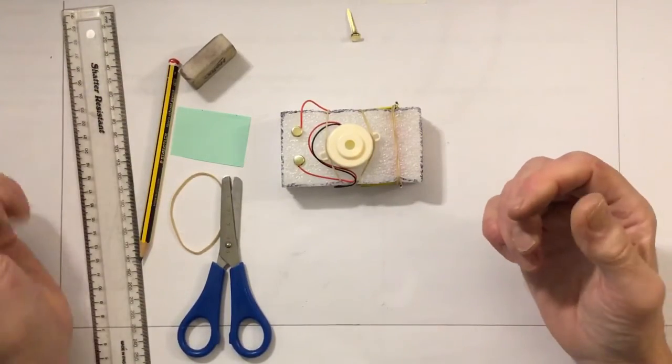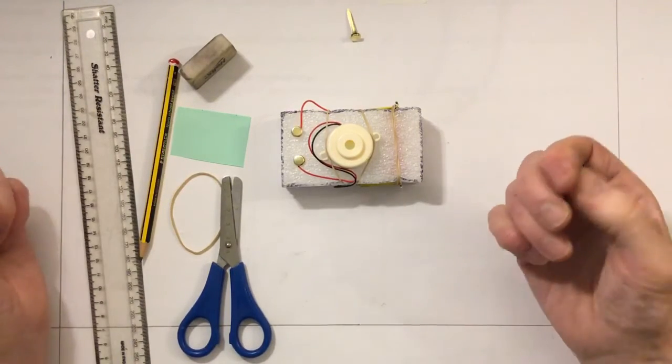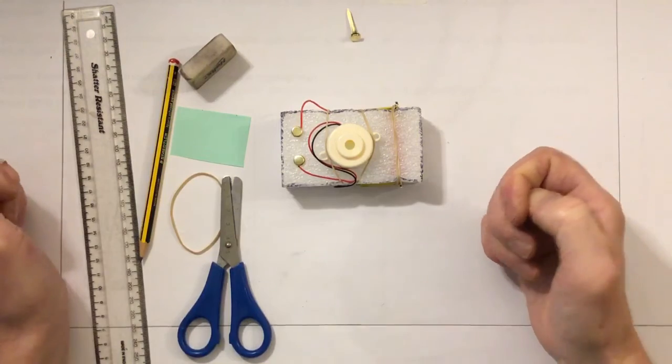The ones which do conduct electricity we call the conductors. The ones which don't conduct we call the insulators.